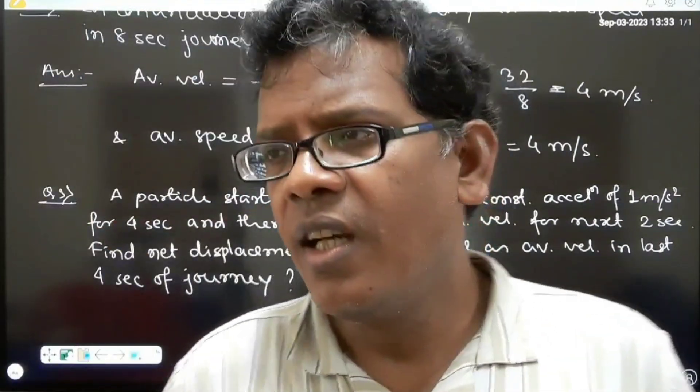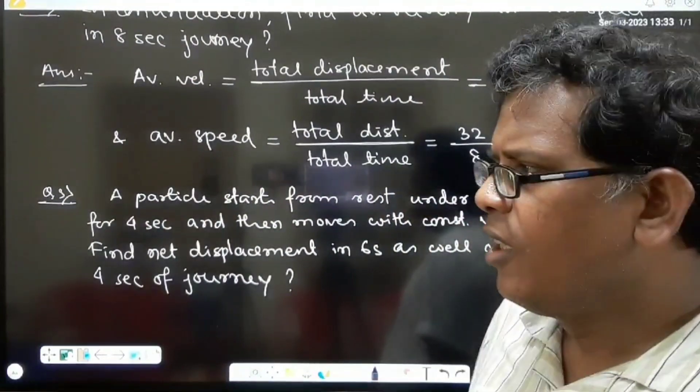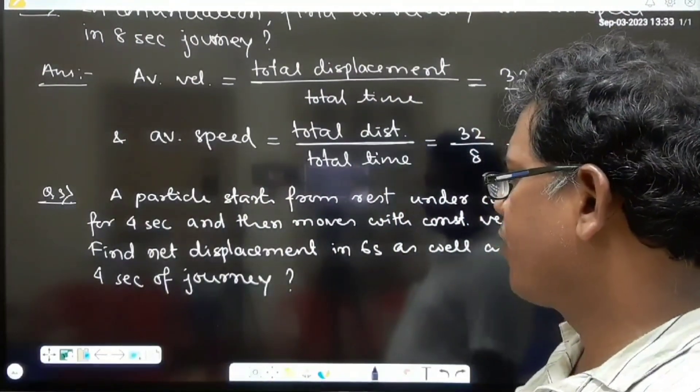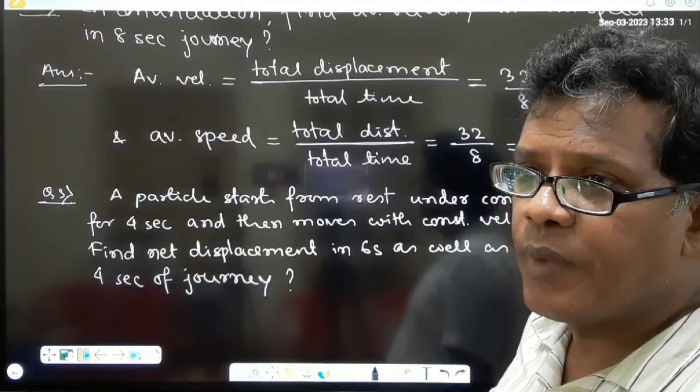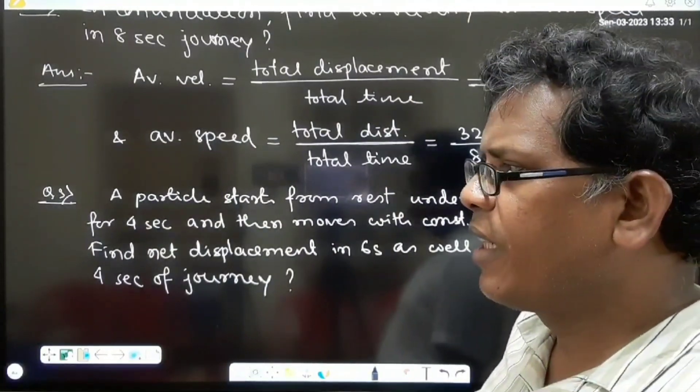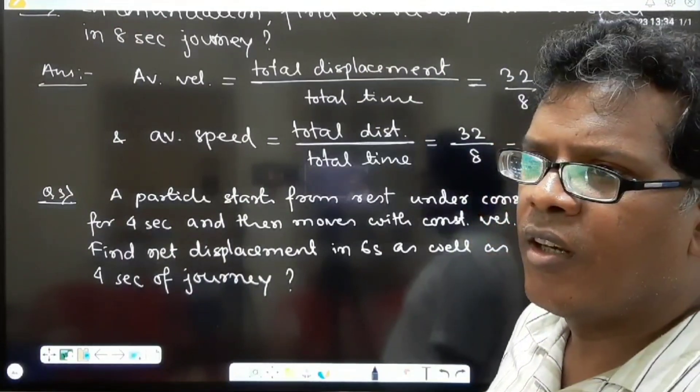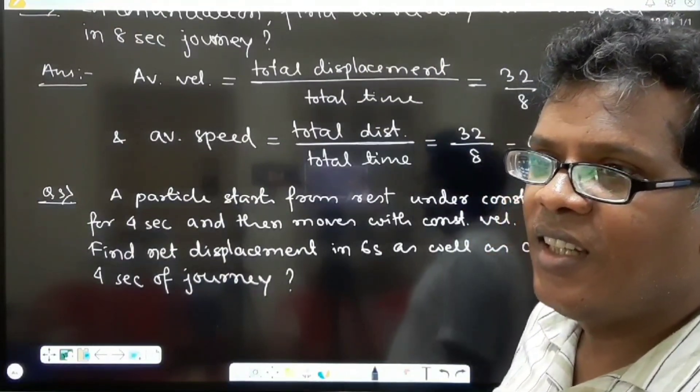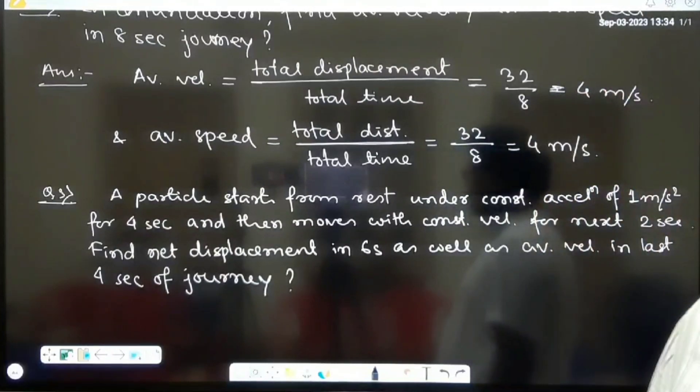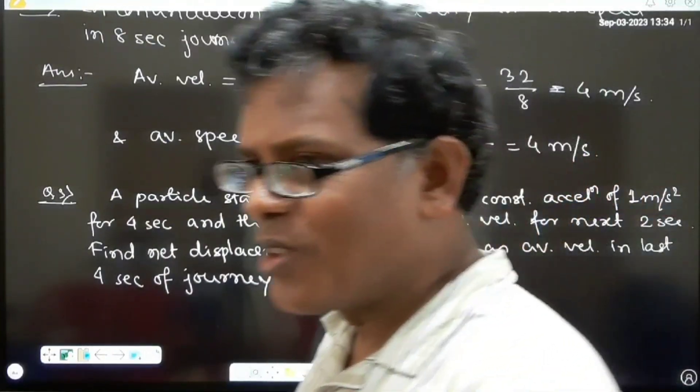So overall it is a 6 second journey we are discussing. In 6 seconds we have to find the net displacement and along with it this time again we need to know the average velocity but not in the entire 6 second journey rather a little bit of trick - the last 4 seconds.